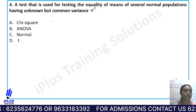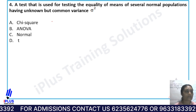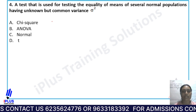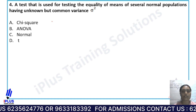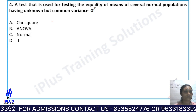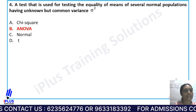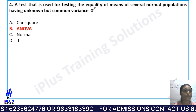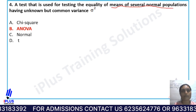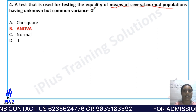Question 4: A test used for testing the equality of means of several normal populations having unknown but common variance sigma square is — Option A: chi-square, Option B: ANOVA, Option C: normal, Option D: T-test. The right answer is Option B, ANOVA, which is used for testing the equality of means across several populations or data sets.